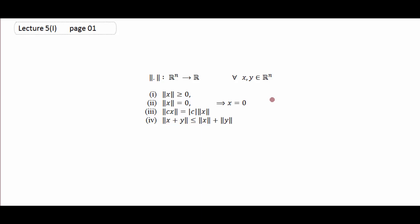مثلاً اگر آپ norm کو as a distance consider کر رہے ہیں تو point A سے B اور B سے C جو distance ہے، یہ always جو direct distance ہے from A to C اس سے greater ہوگا، کیونکہ distance between two points is a straight line۔ The generalization of these three properties tends to the notion of norm۔ ایسی vector space جس پہ norm defined ہو، اسے آپ normed space یا normed vector space کہتے ہیں، جو linear algebra یا functional analysis میں study کی جاتی ہے۔